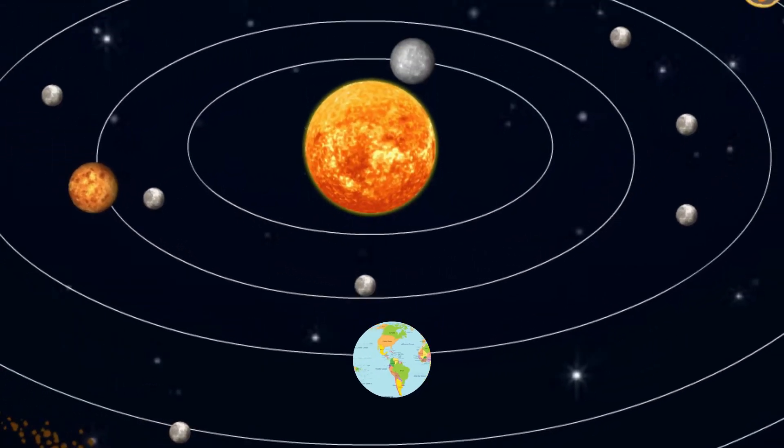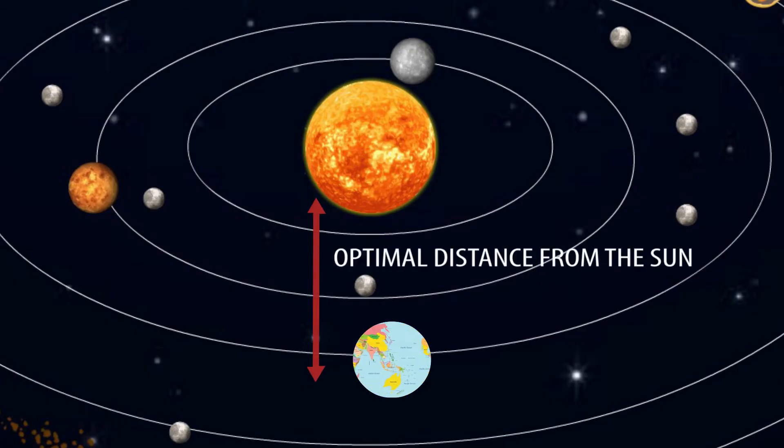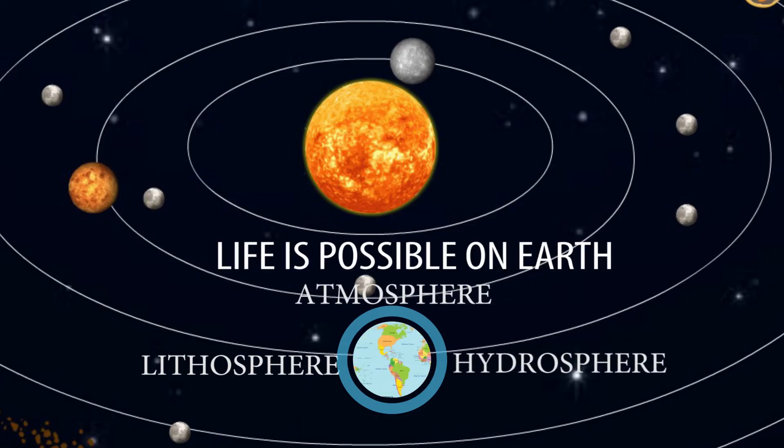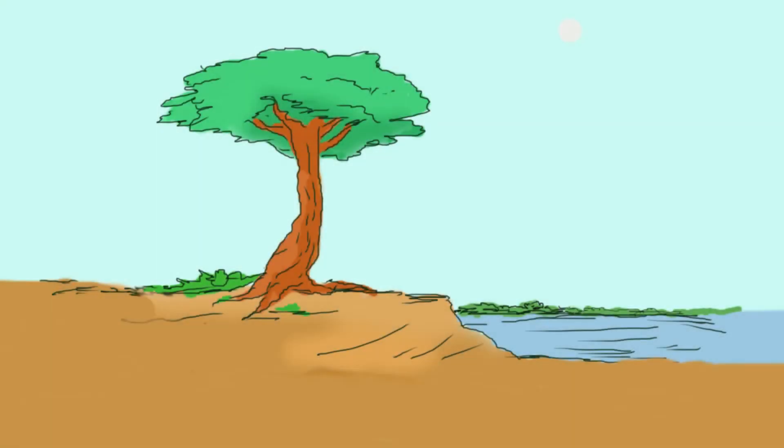Earth is situated at optimal distance from sun and has optimal balance between lithosphere, atmosphere, and hydrosphere, which is why life is possible on it. Living organisms are found in all atmosphere, hydrosphere, and lithosphere.